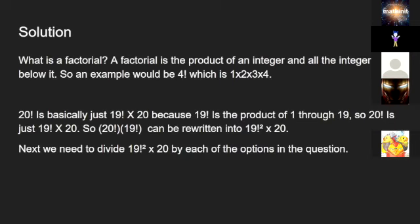The solution. A factorial is the product of an integer and all the integers below it. For example, 4 factorial is 1 times 2 times 3 times 4. Since 20 factorial is just 19 factorial times 20, then 20 factorial times 19 factorial can be rewritten as 19 factorial to the power of 2 times 20.